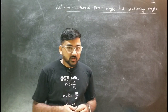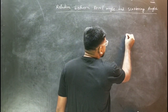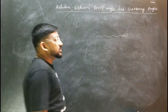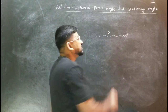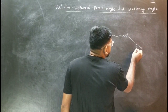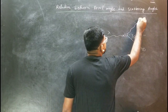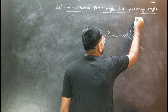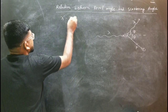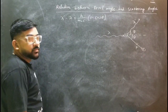In the Compton effect, we suppose a free electron is at rest. A photon of wavelength lambda is incident on this electron and they collide. The electron recoils at angle theta with linear momentum p, and the photon is scattered at angle phi with wavelength lambda dash. We have already derived the Compton wavelength shift: lambda dash minus lambda equals h over m₀c times (1 minus cos phi).